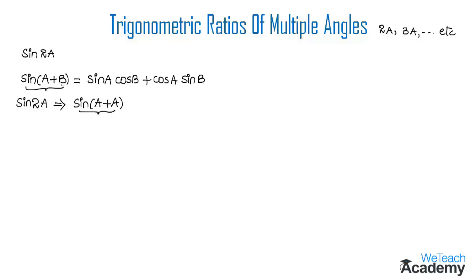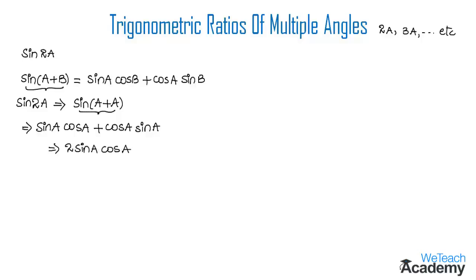We replace b with a in the compound angle formula. So we get sin(a)cos(a) + cos(a)sin(a), which becomes 2sin(a)cos(a). Let us name this equation 1. Therefore, sin(2a) = 2sin(a)cos(a).